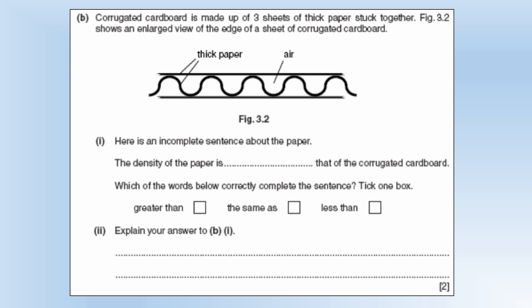So corrugated cardboard is made of three sheets of thick paper stuck together and we've got an enlarged view from the diagram. Here is an incomplete sentence. The density of paper is blank that of the corrugated cardboard. Well the answer is it's going to be greater than